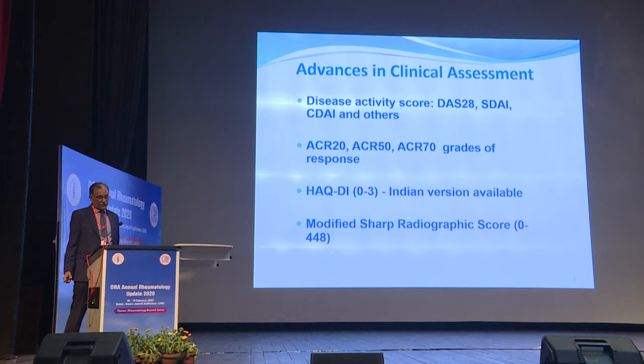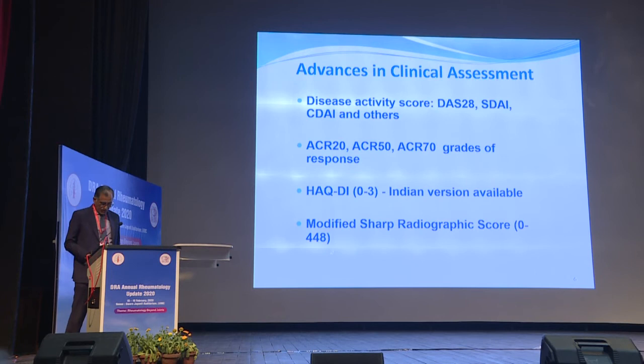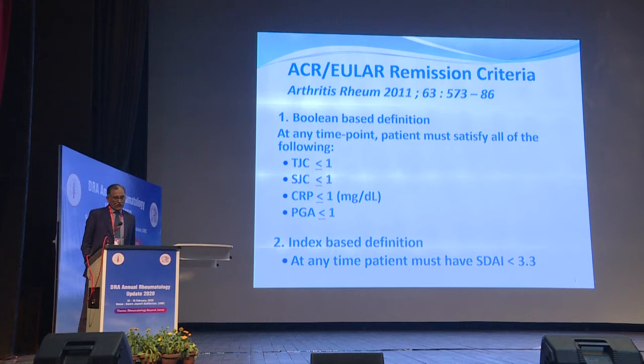There is also a way of measuring disability — the HAQ disability index, and we have an Indian version of this. Similarly, we have very good radiographic scores. The van der Heijde modified Sharp score is well known; it ranges from 0 to 448 and takes into account both erosions and joint space narrowing.